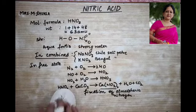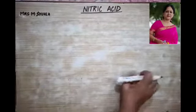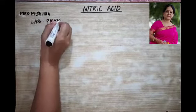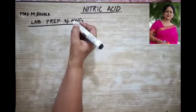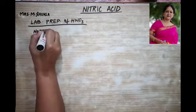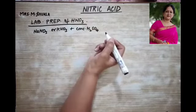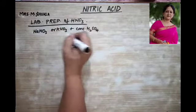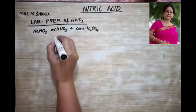Now let us begin with the laboratory preparation of HNO3. For laboratory preparation, the reactants required are either NaNO3 or KNO3 along with concentrated H2SO4. All of this is placed in a glass retort.